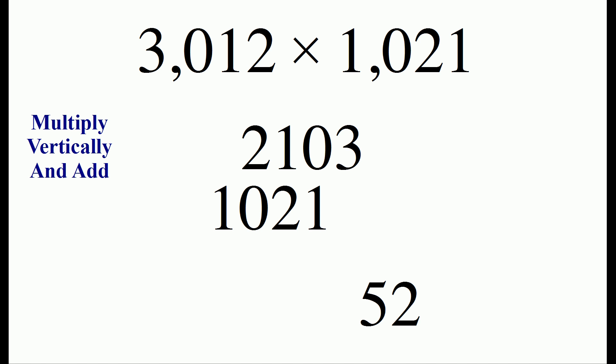We slide one more time and now we multiply vertically and add. So 2 times 0 is 0, 1 times 2 is 2, and 0 times 1 is 0. So in this step of the sliding we only have 2.